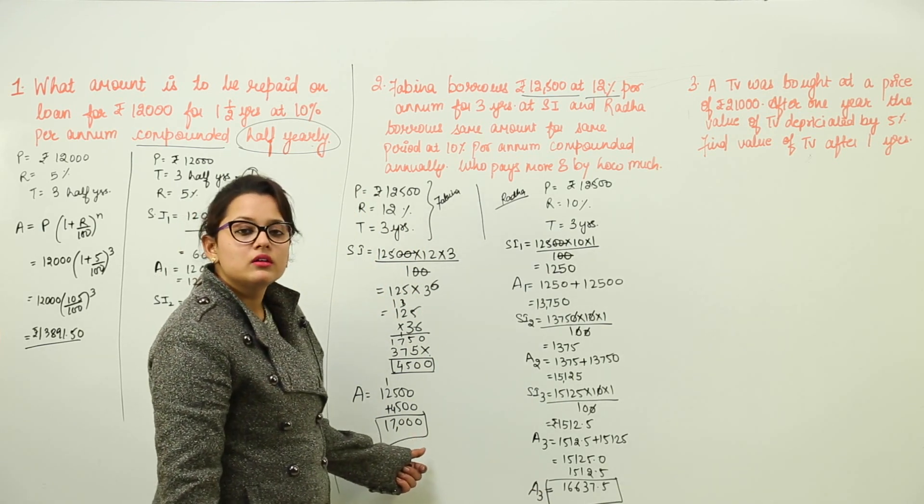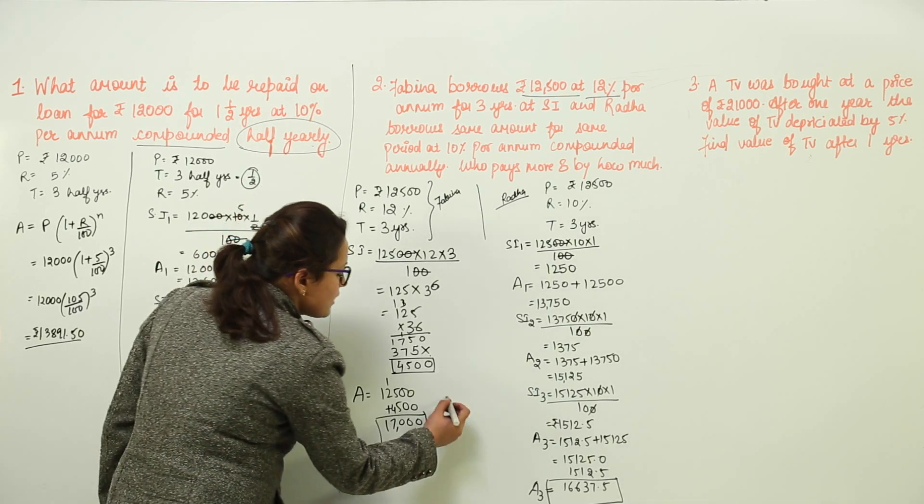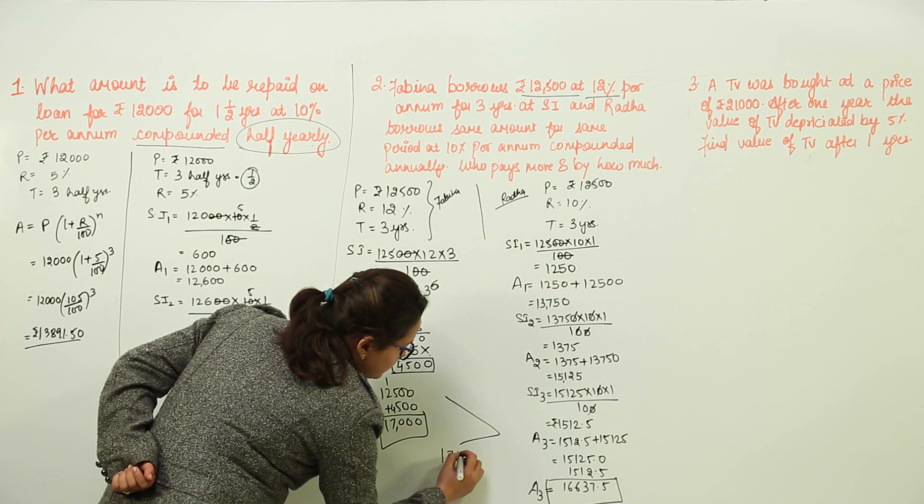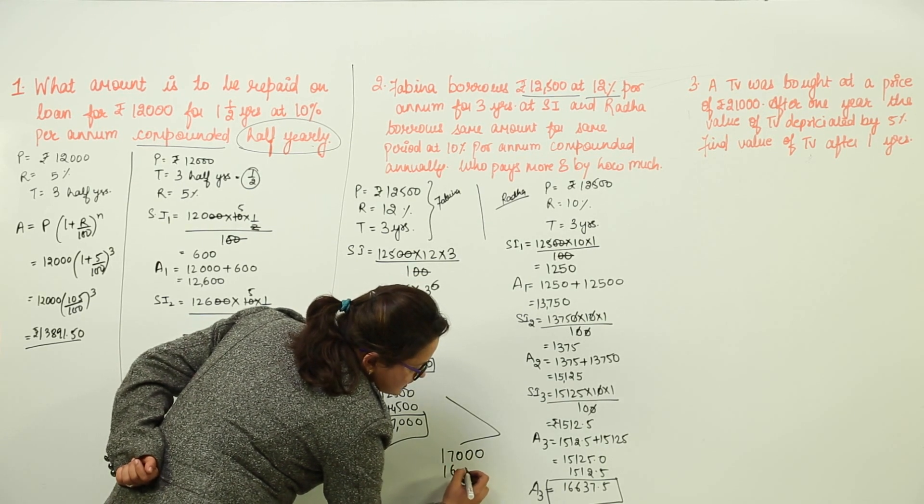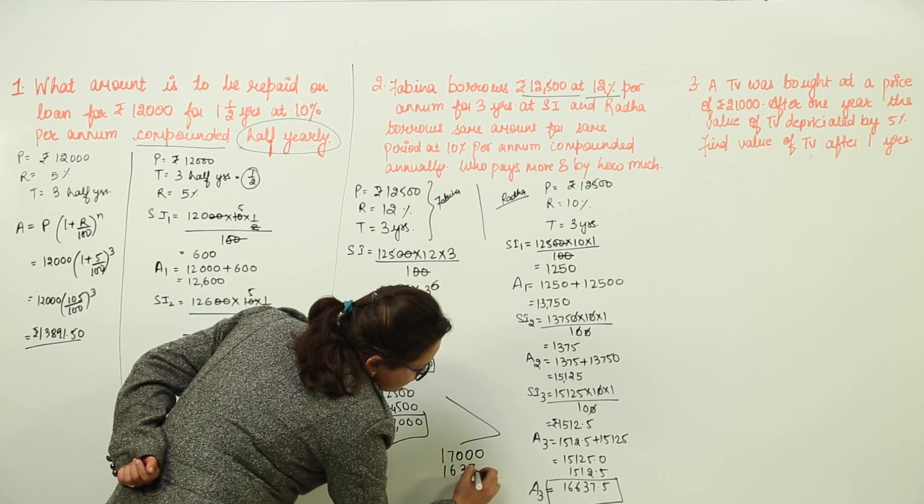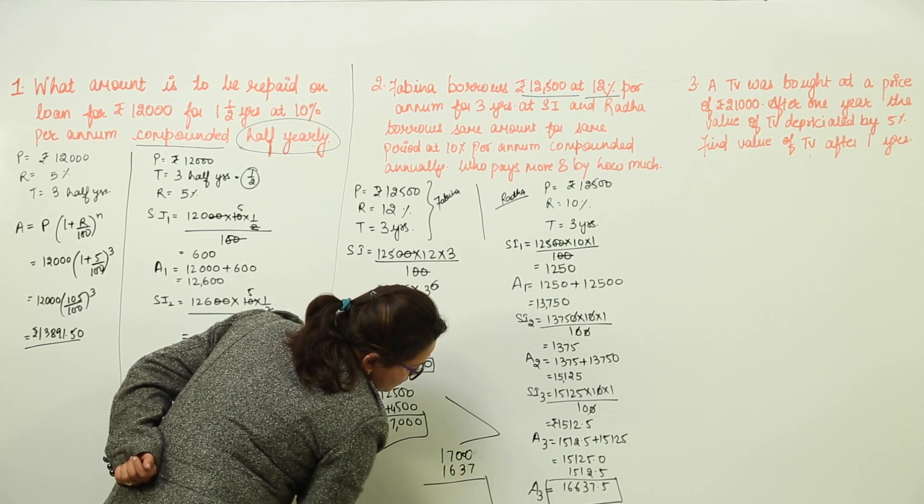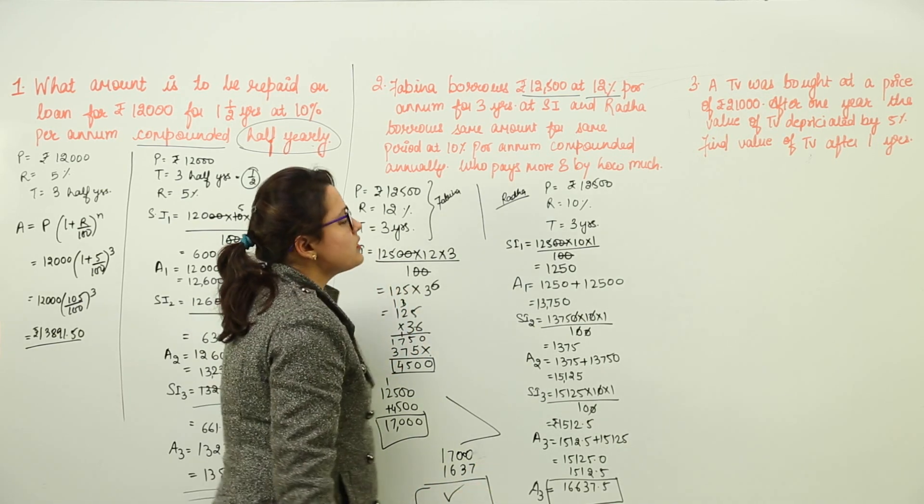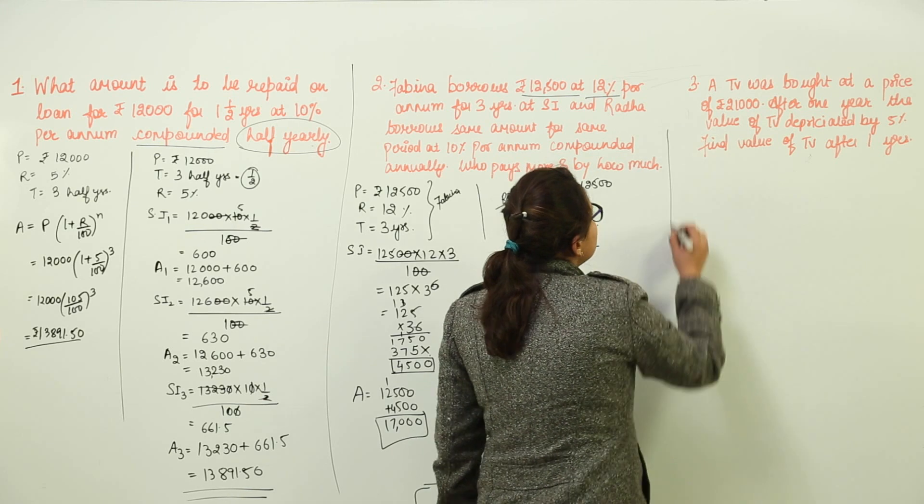Who is paying higher? Obviously, Fabina is going to pay higher. By how much? You subtract 16,637.5 out of the 17,000 and you will come to know who has paid more. Let us move on to the third question.